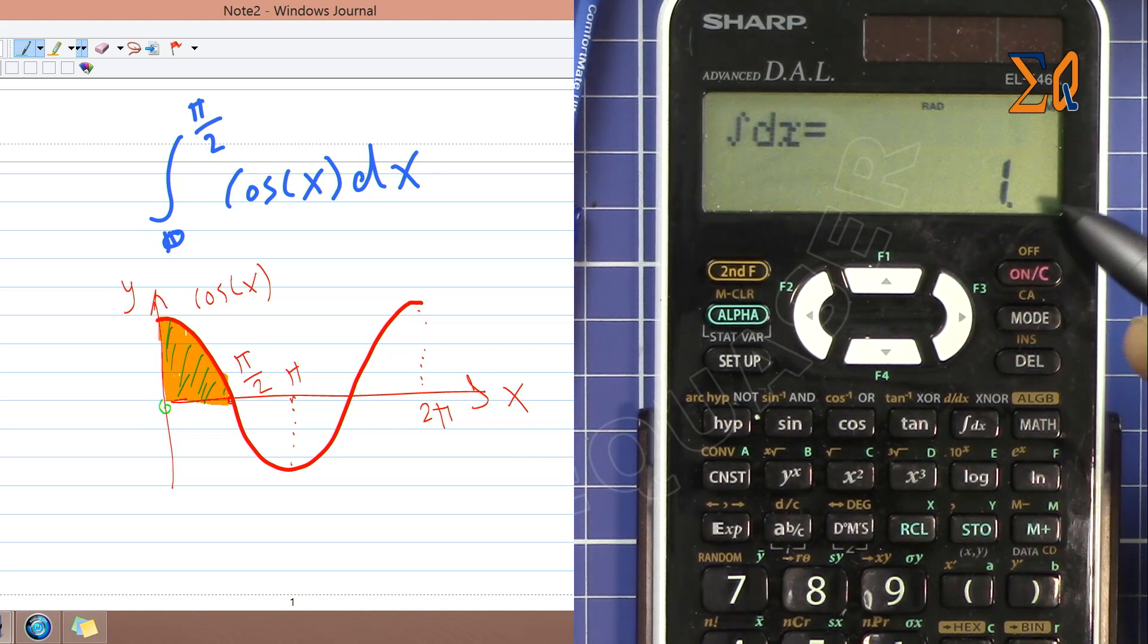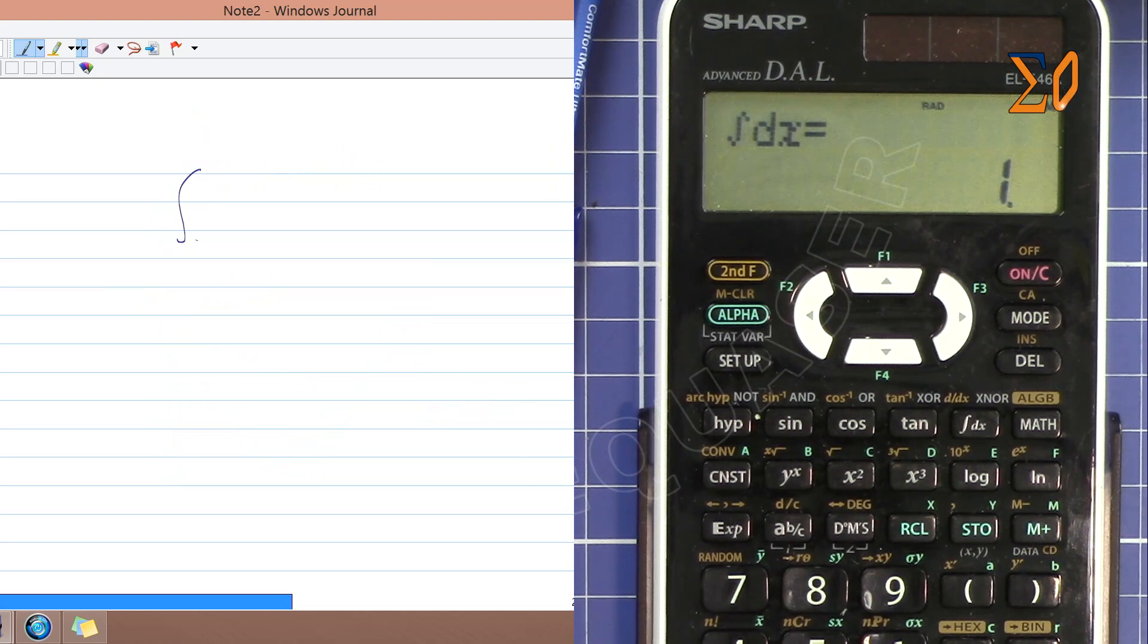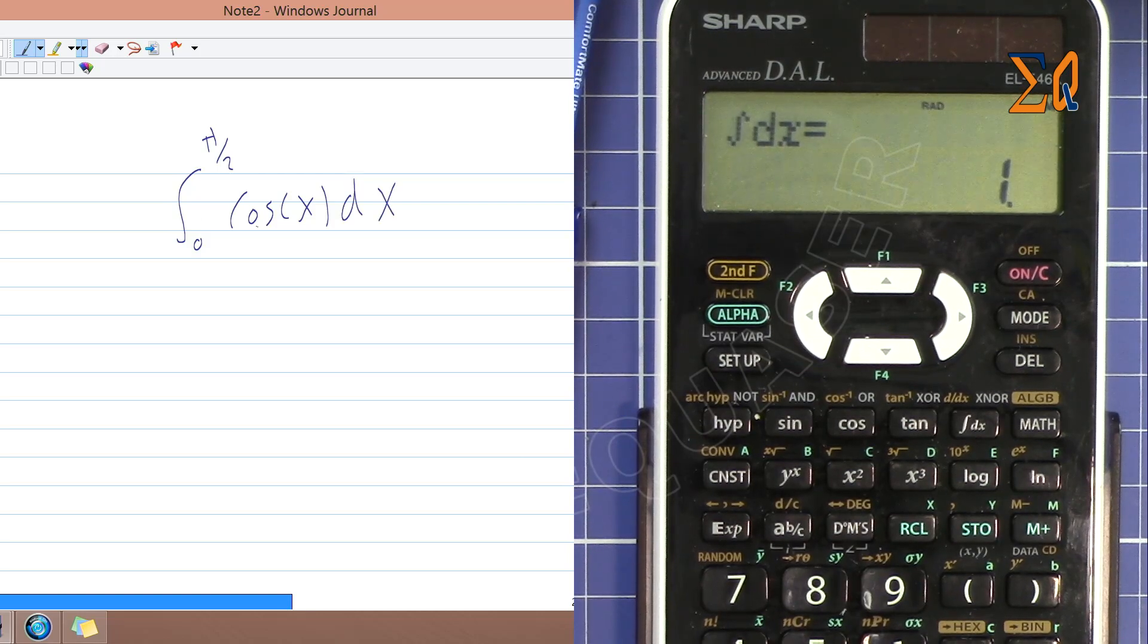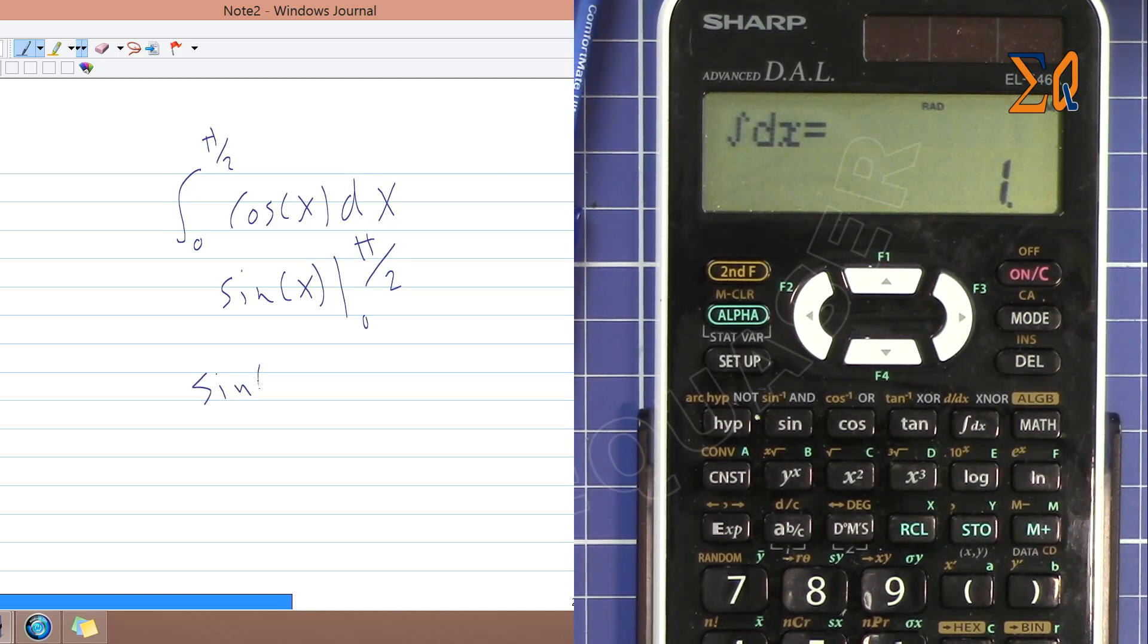So the answer is 1, which is correct. If you want to do it by hand, integral from 0 to π/2 of cosine of x dx—to integrate this, it will be sine of x from 0 to π/2. To evaluate it: sine of π/2 minus sine of 0. As you can see here, sine of 0 is 0, and sine of π/2 is—if you remember this, that is π/2, and then this is 1—so this value is 1. That's what we got.